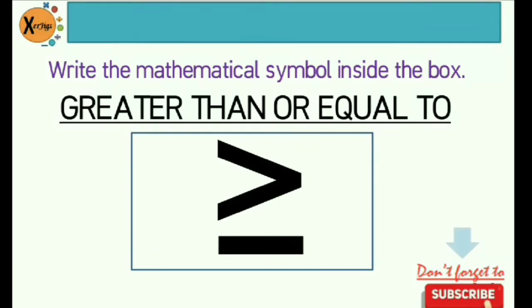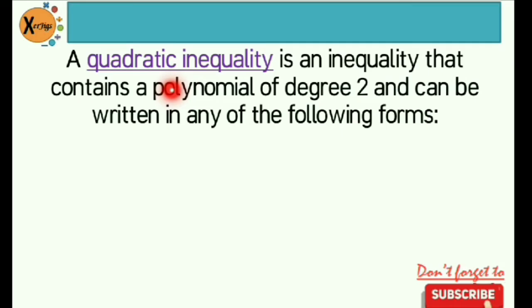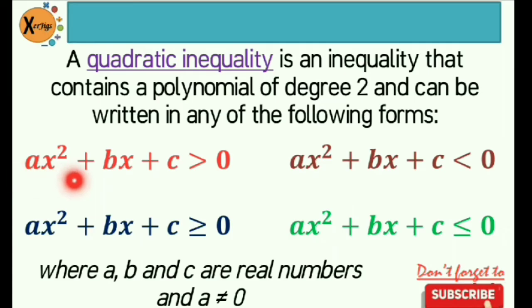Since we are done recalling some mathematical symbols, we will now define what quadratic inequality is. It is an inequality that contains a polynomial of degree 2 and can be written in any of the following forms: ax² + bx + c > 0, ax² + bx + c ≥ 0, ax² + bx + c < 0, and ax² + bx + c ≤ 0. Where a, b, and c are real numbers and a should not be equal to 0.